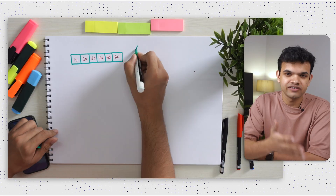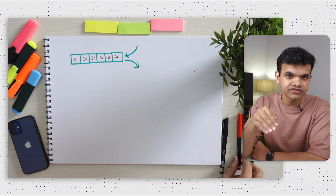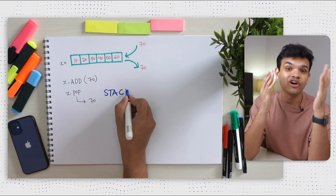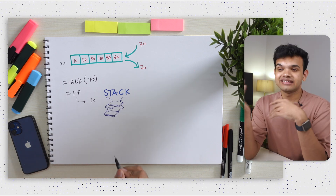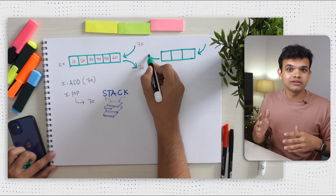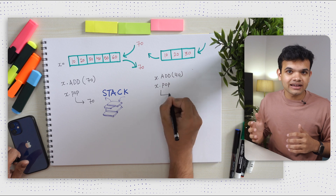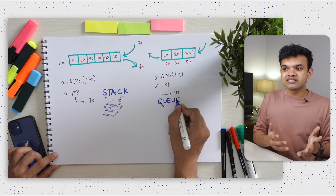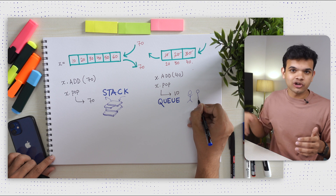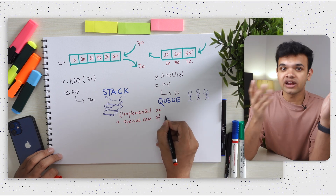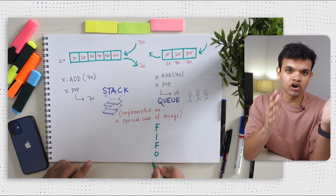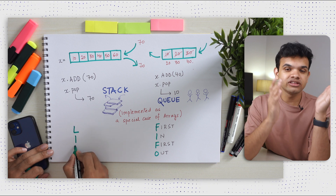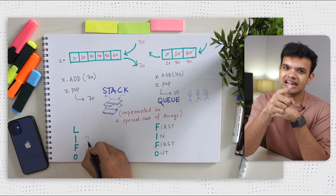Right now we can insert, update, or retrieve data from anywhere in the array. What if we add a condition that we can only add at the back of the array and remove elements from the back? We call that a stack — like a stack of books, you add books on the top and remove from the top. The other version is a queue — we add elements from one end and remove from the other. People join from the back and leave from the front. The queue follows a FIFO order — first in, first out. The stack follows a LIFO order — last in, first out.